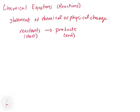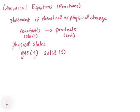When we write these out, there are a couple of things to note. It's always helpful to indicate the physical states, because this can make a difference — for example, you might want to produce something in gaseous form. We denote gas as (g), solid as (s), liquid as (l), and aqueous — when something is dissolved in water — as (aq).